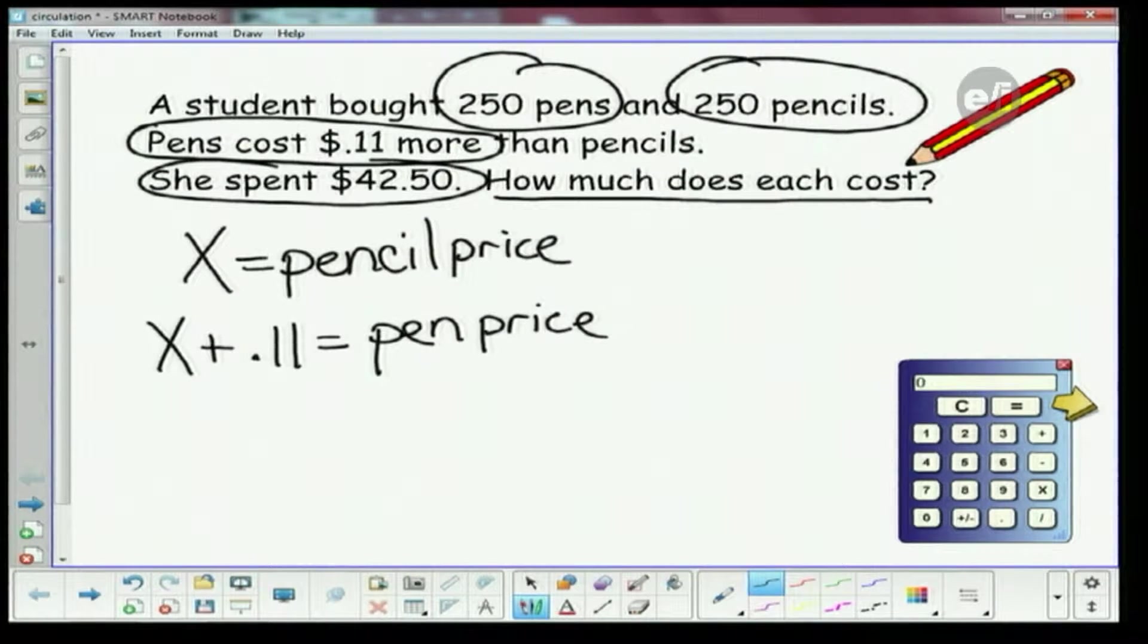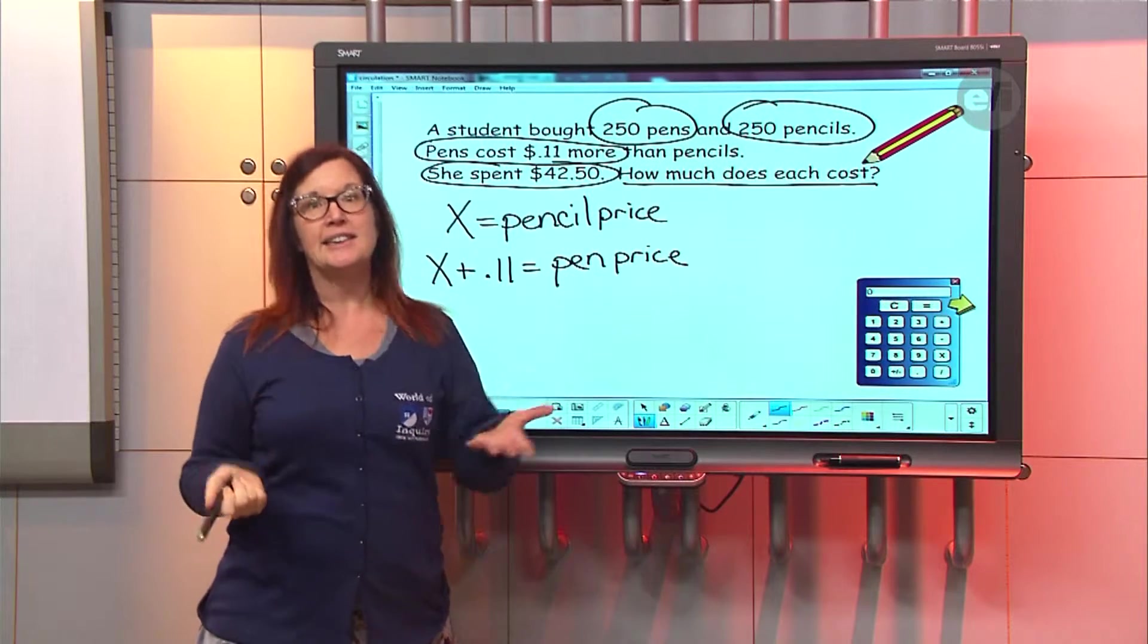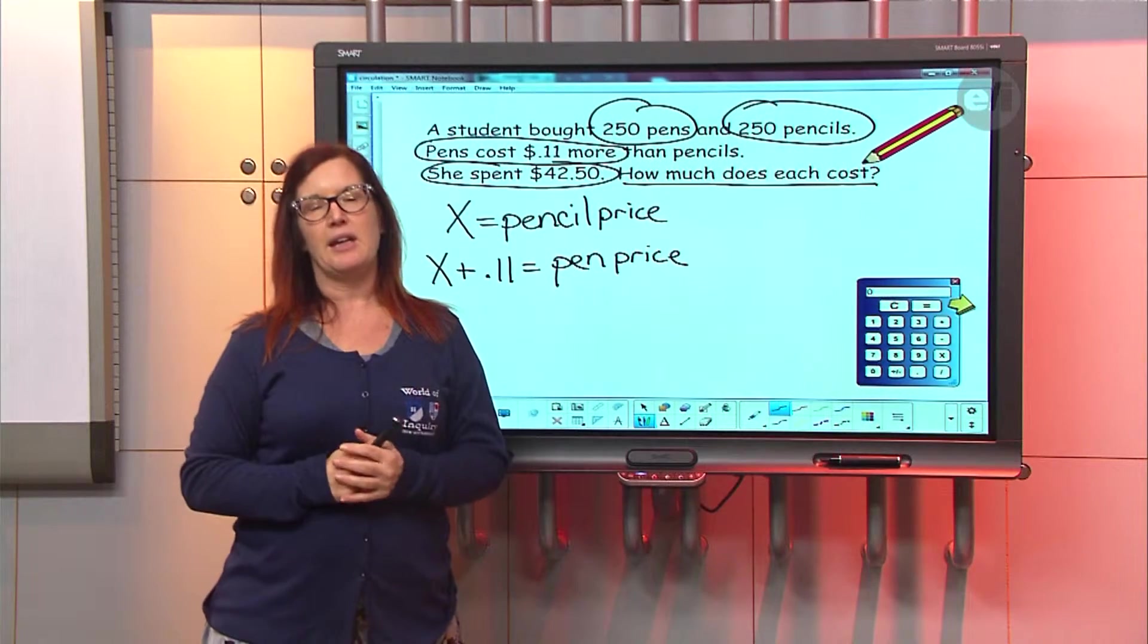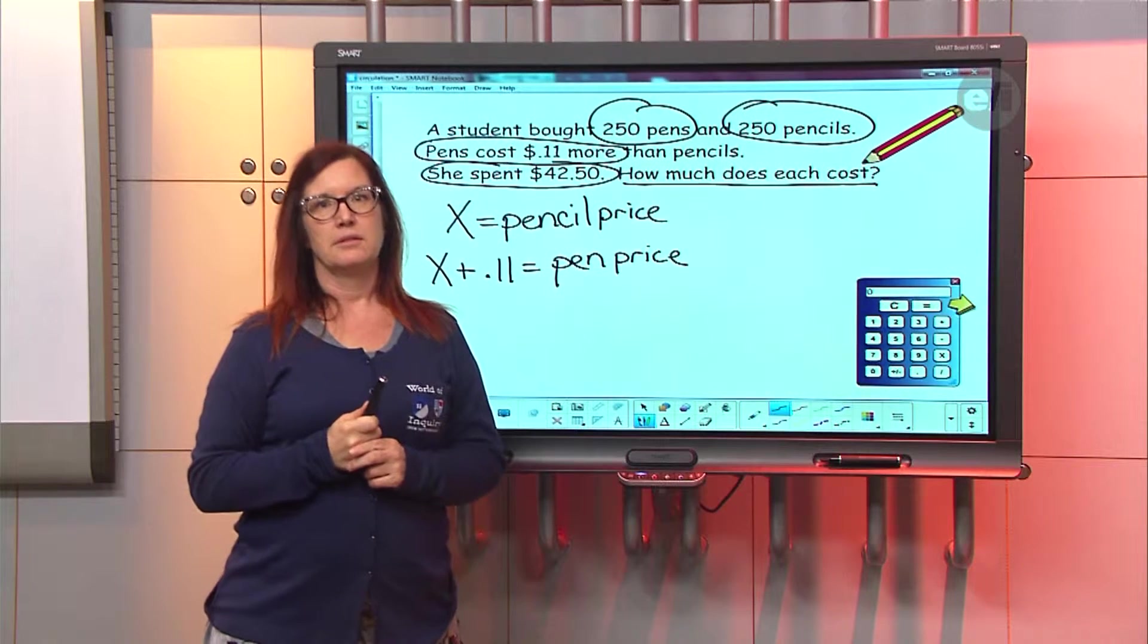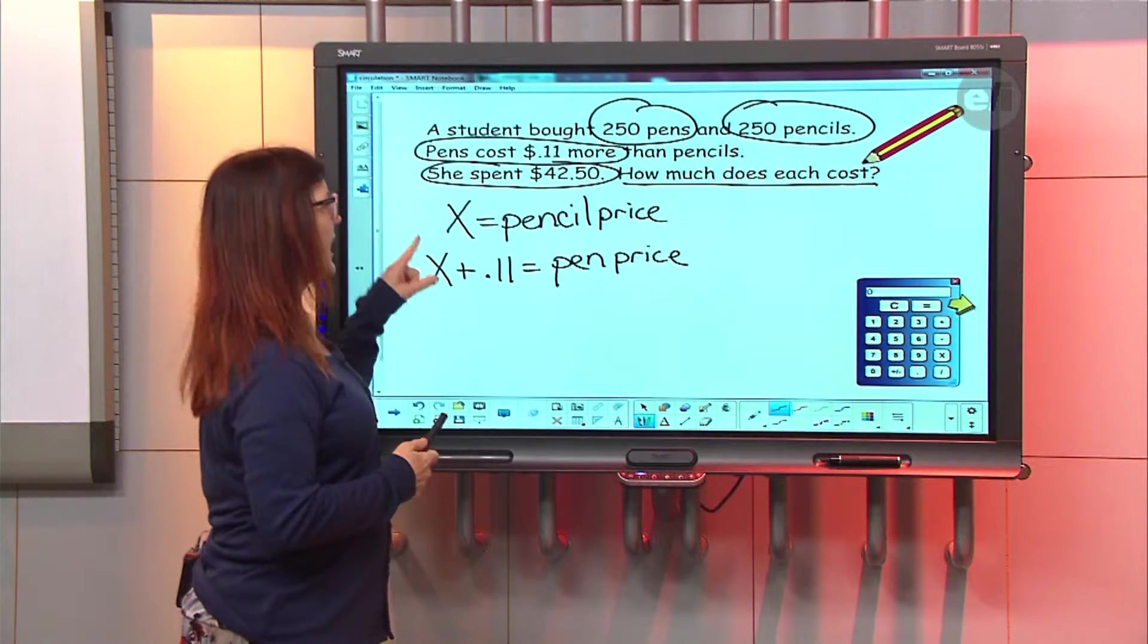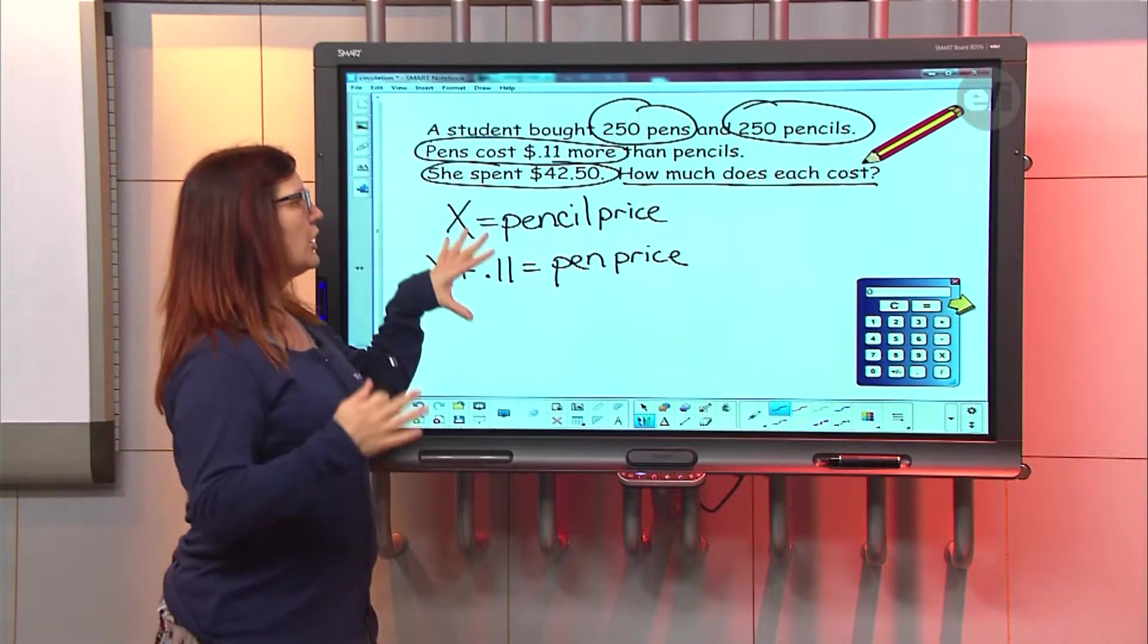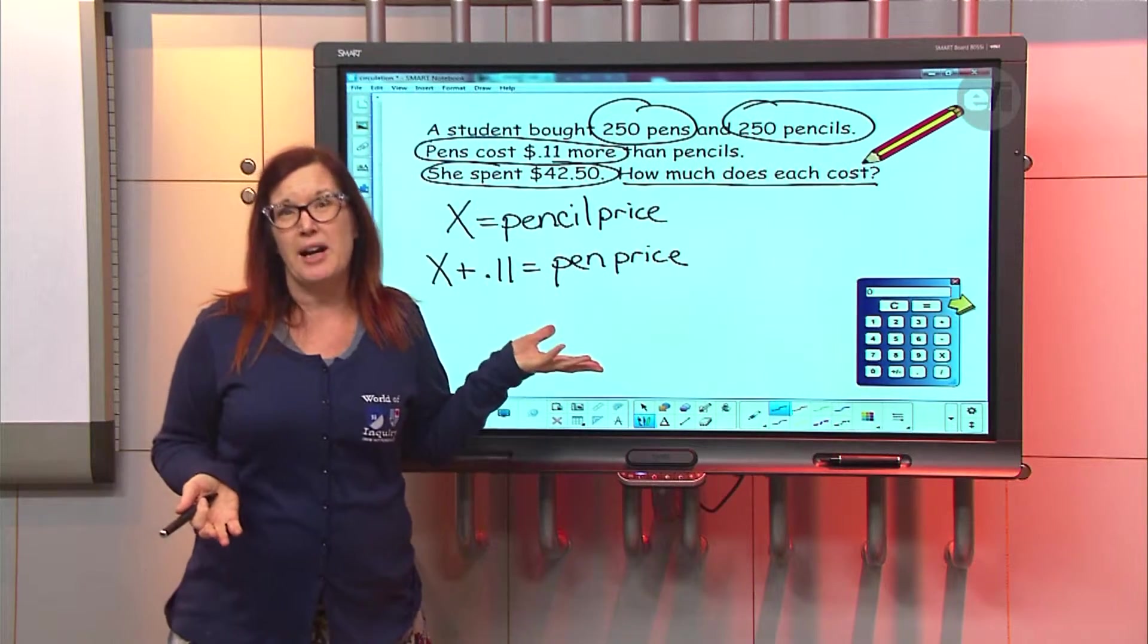So like, if I knew that the pencils were 10 cents, how much would the pen be? Just 11 cents more. 11 cents more, right. So no matter what it is, we're going to add it to it. So this is actually kind of the hardest part.